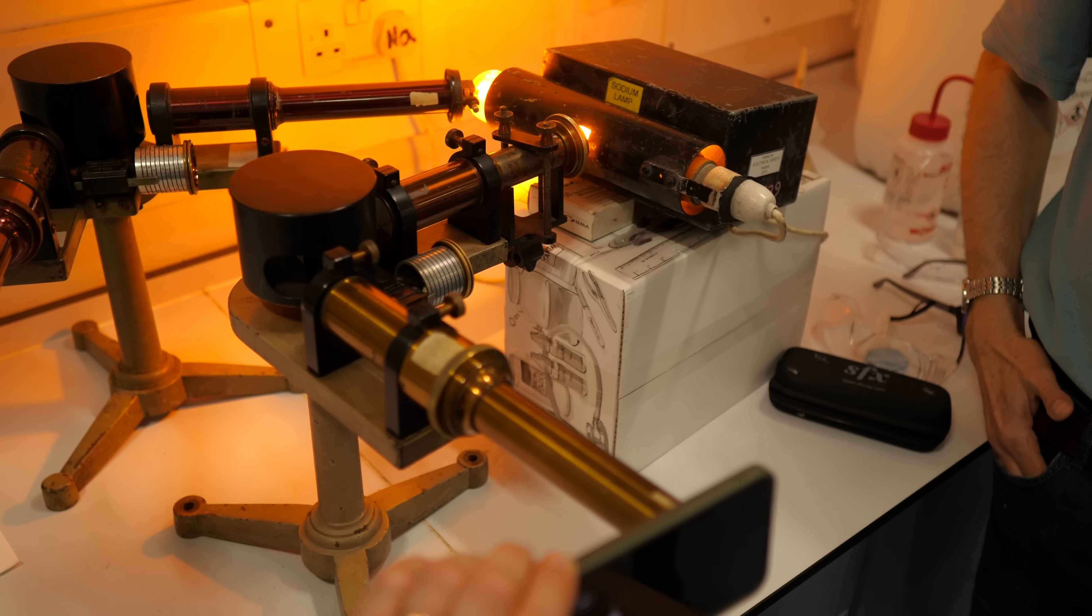I did have a go with this spectrometer at UCL, and you can kind of see a doublet there. The reason there are two lines instead of one, by the way, is because of electron spin.